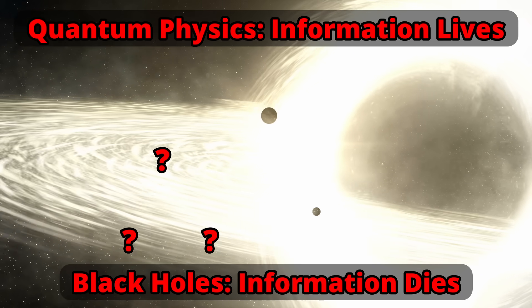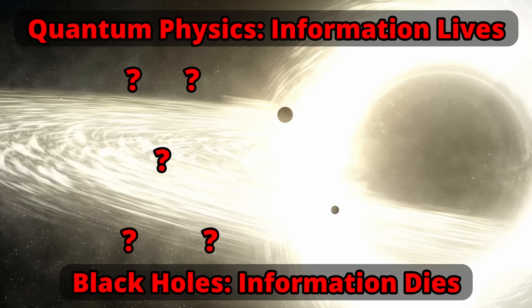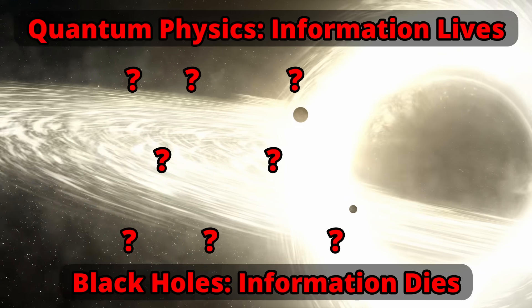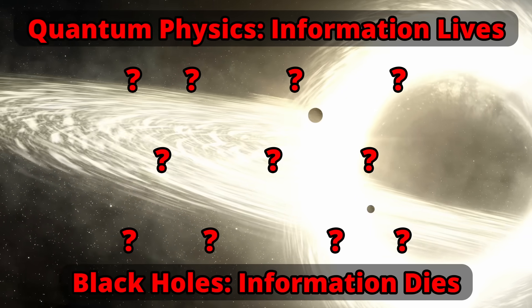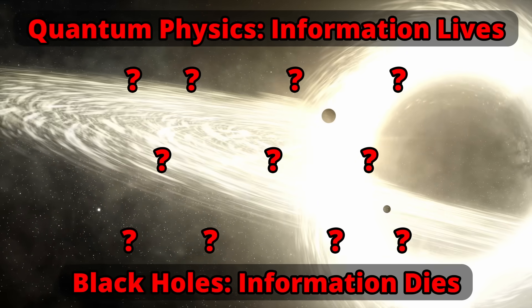8. The Black Hole Information Loss Paradox. In quantum physics, information can't be destroyed. Yet, black holes seem to destroy it. If something falls into a black hole, it's gone for good. The only thing that comes out of the black hole is Hawking radiation, and that's completely random and contains no information besides its temperature. So what gives? Either quantum physics is wrong, or what we think about black holes is wrong.